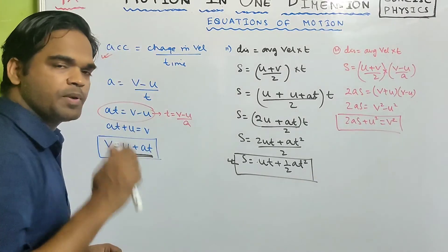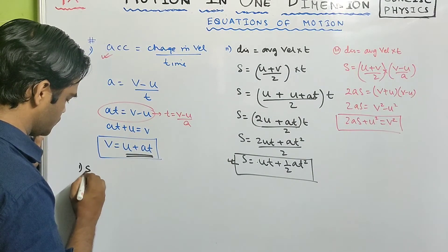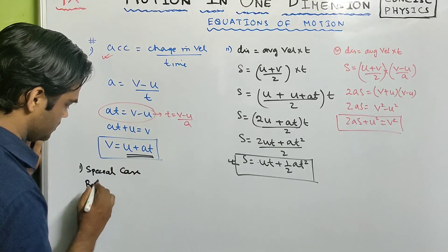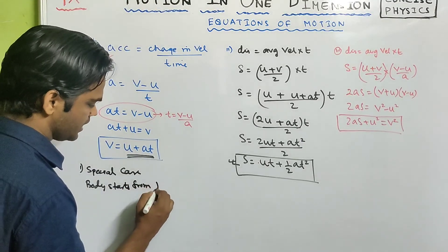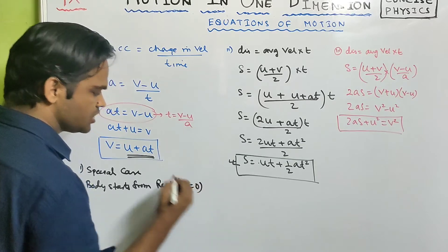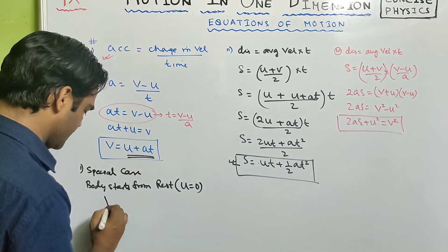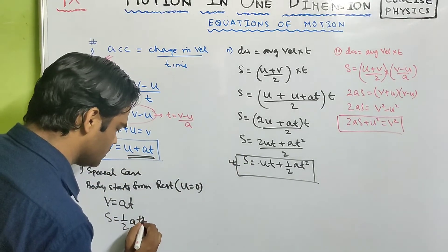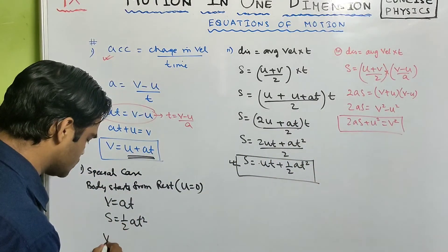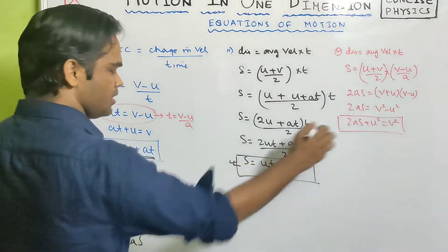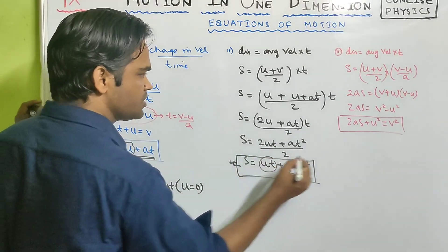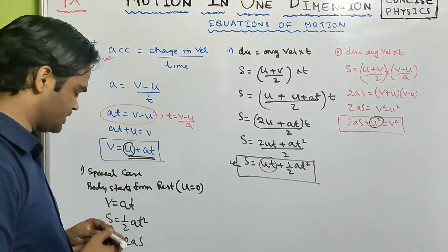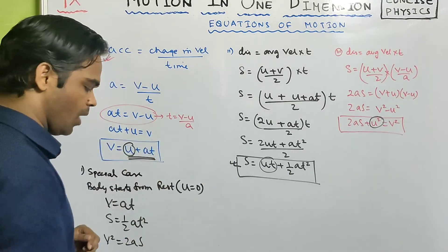Now two special cases. First, suppose a body starts from rest, which means initial velocity u equals 0. Then the equations become: v equals at; s equals half at squared; and v squared equals 2as. Each term with u drops out, giving these simplified forms.